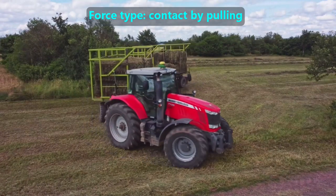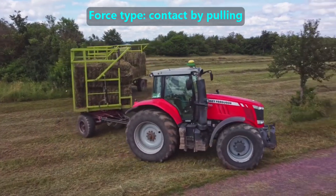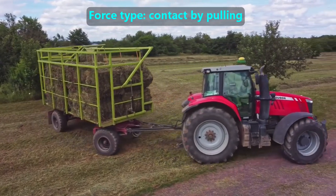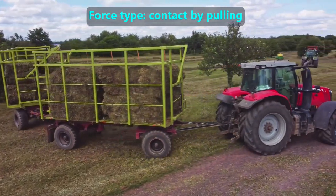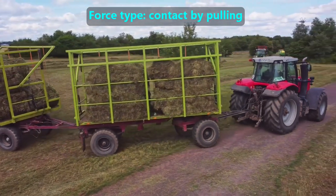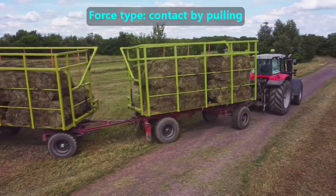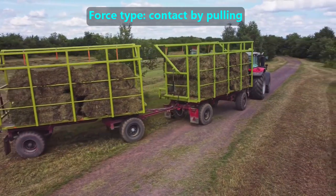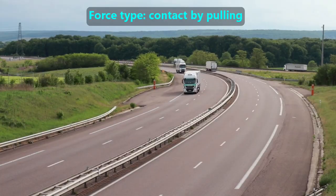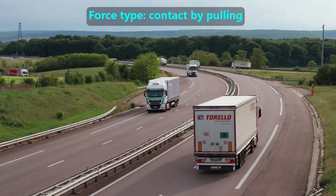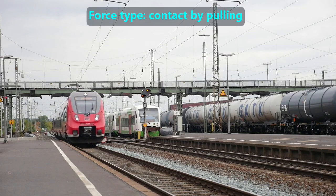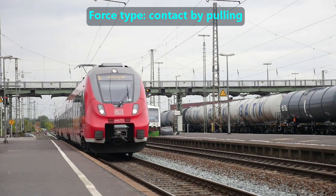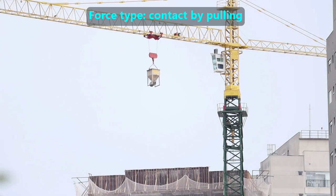In this overview video, the first of the seven common forces we'll discuss is called contact by pulling. When we say contact, we mean the force is touching the load, such as by being connected with a hitch. This is a very common way to move objects like trailers on farms, trailers on roads, or train cars on train tracks. The pulling force is usually in front of the load, but sometimes the force is above the load as with this crane.